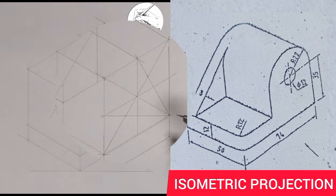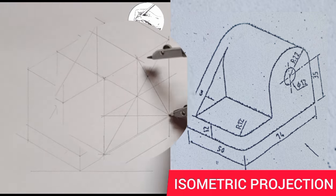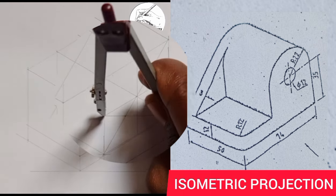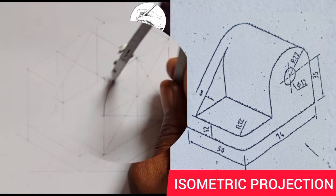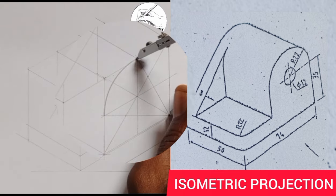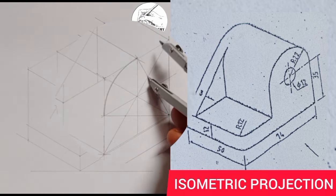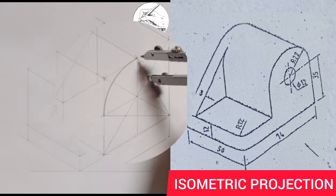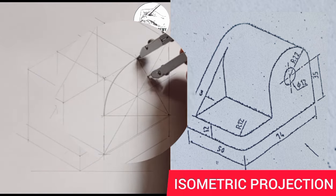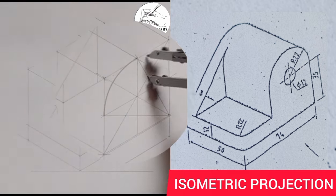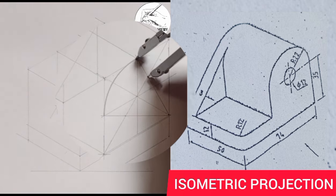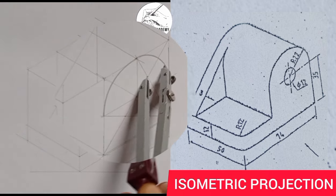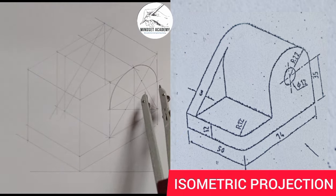Place the compass at this end, then connect this point to this point. Then I'll come to this point and connect this point to this point. Then this one to this point — we get the arc. Can you see that?